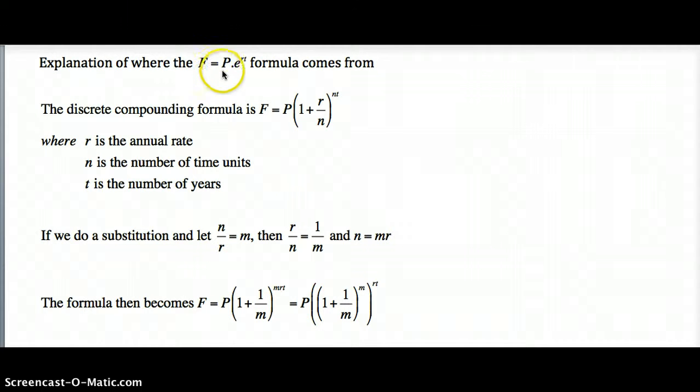Okay, well if you look at the original form of the discrete compounding formula, which is F equals P times (1 plus r over n) to the nt, that's very similar to the P times (1 plus i) to the power t formula.